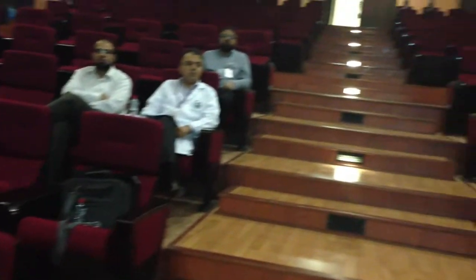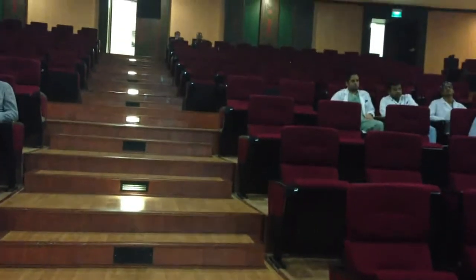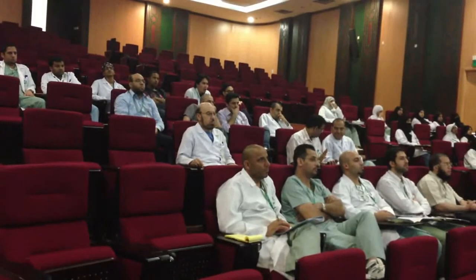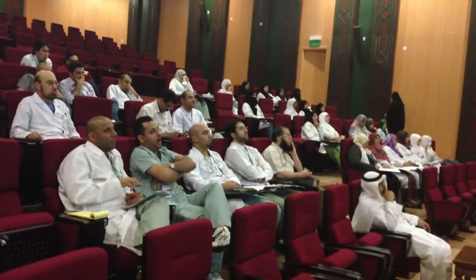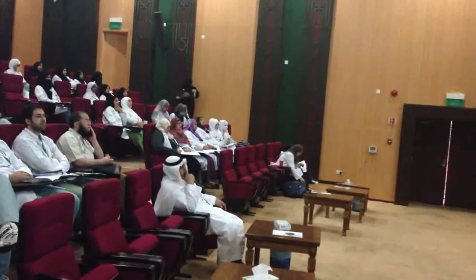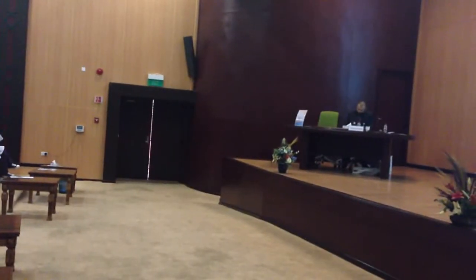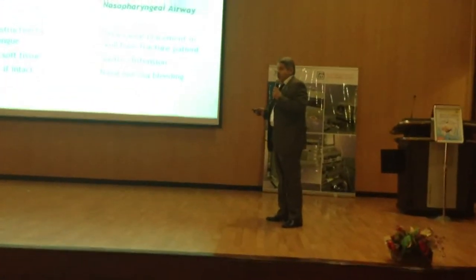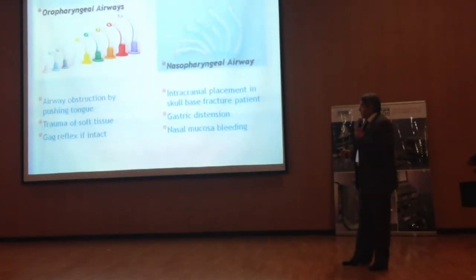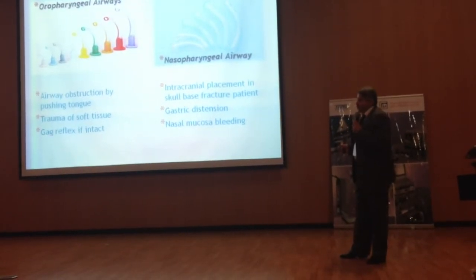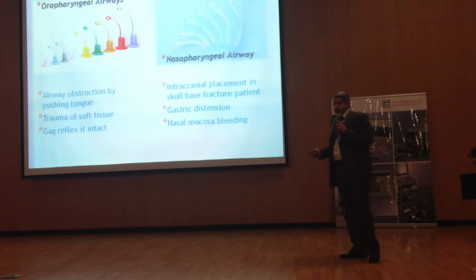The complications of the oropharyngeal airway include: airway obstruction by pushing the tongue posteriorly — overcome by rotating the device 180 degrees or using a tongue depressor. Other complications include trauma to the patient's oral structures and gag reflex in conscious patients. Improper sizing can also cause complications: a device that is too small can be lost in the oropharynx causing obstruction, and one that is too large can obstruct the airway by pushing the epiglottis and closing the glottis.